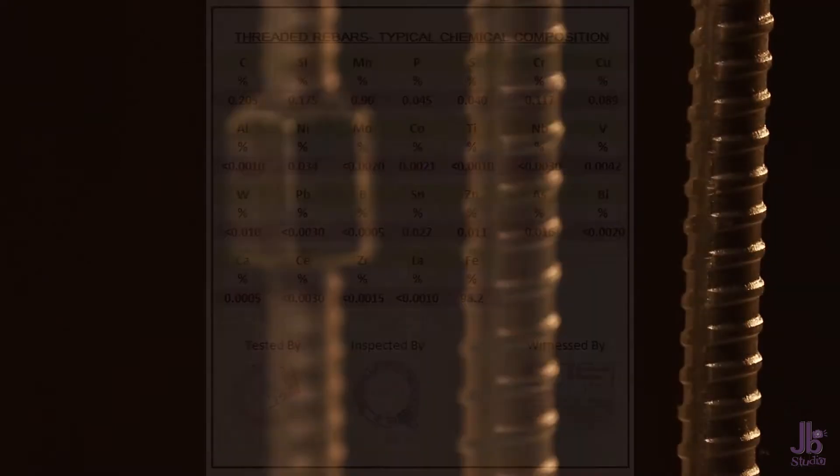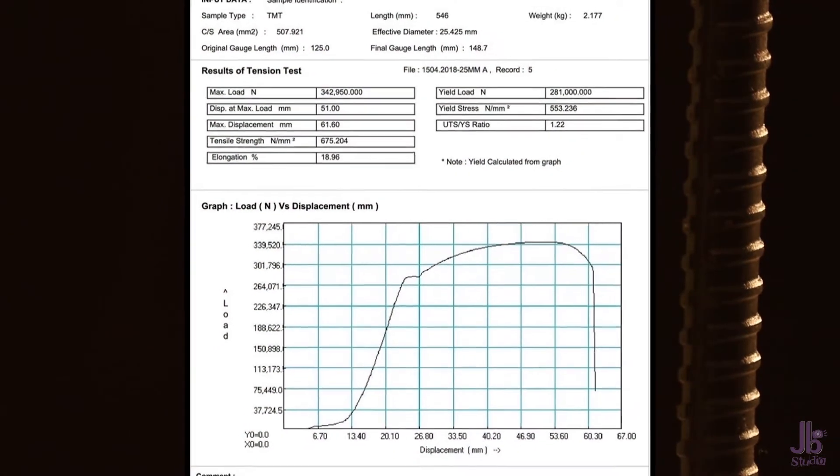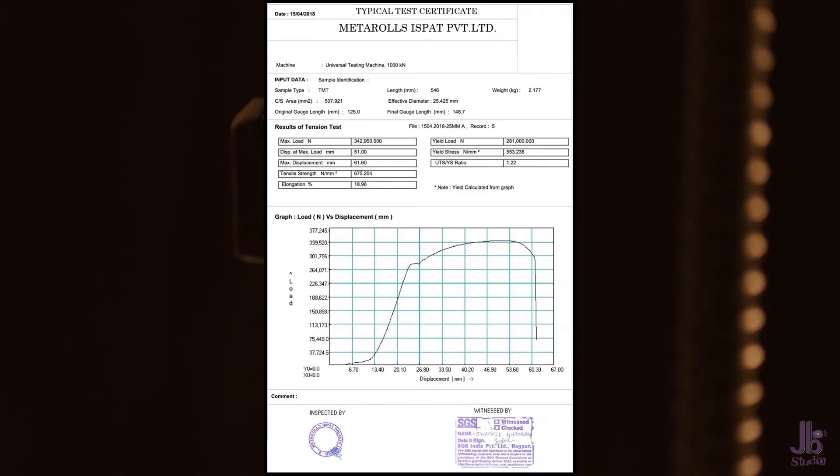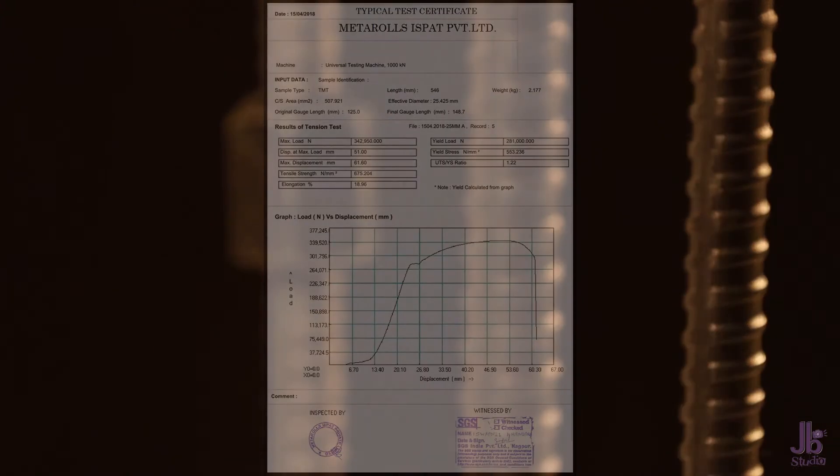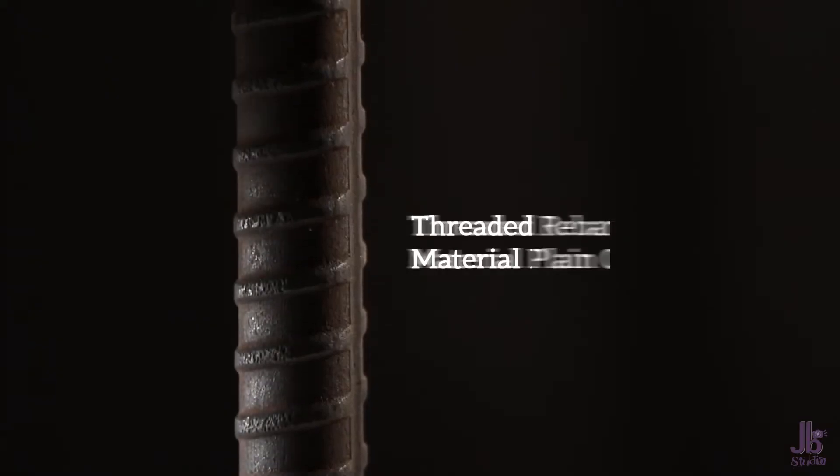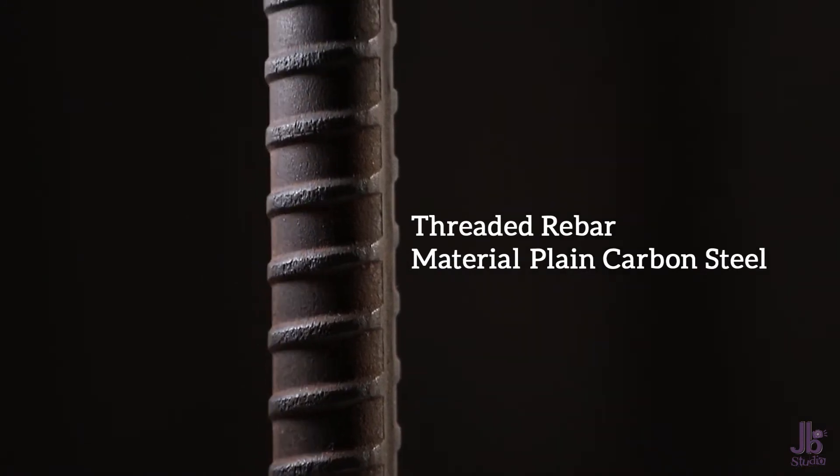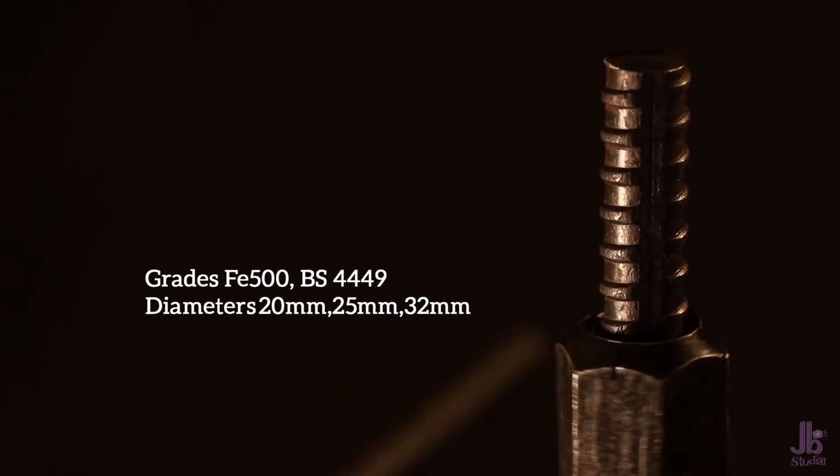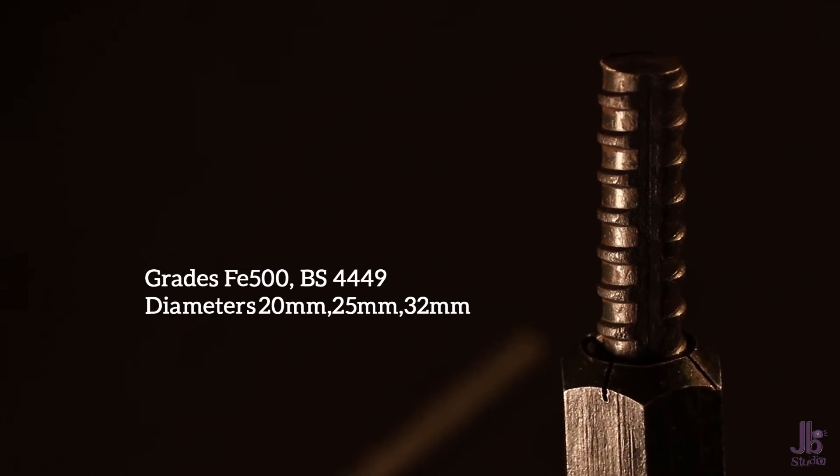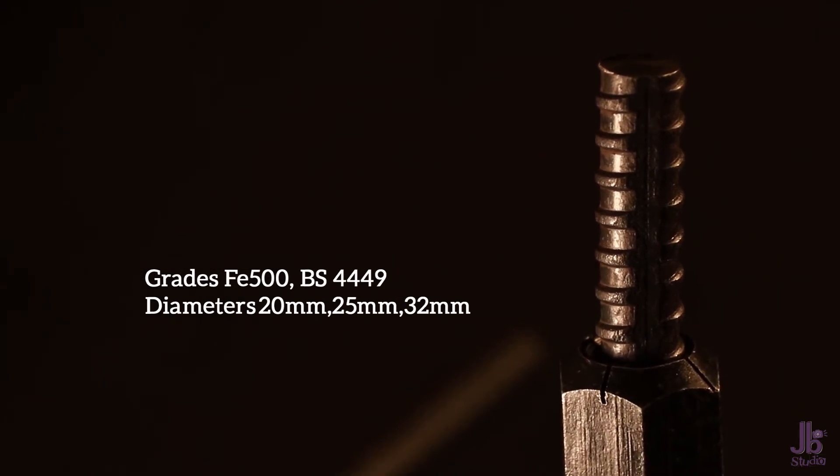We also perform testing under third-party inspection agencies of high reputation like SGS. The material used in threaded rebars is plain carbon steel with standards like FE500 and BS4449, with diameters of 20 mm,